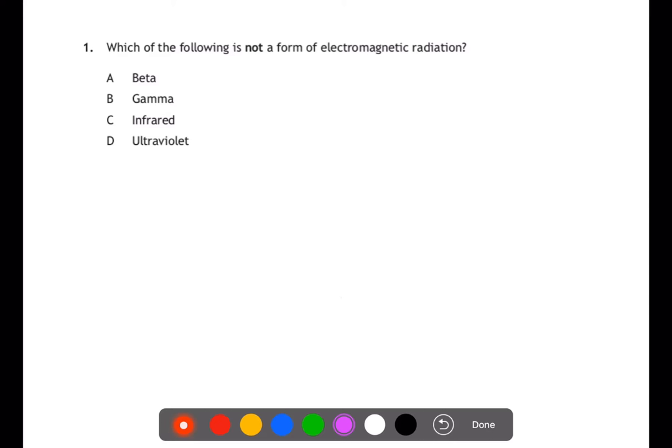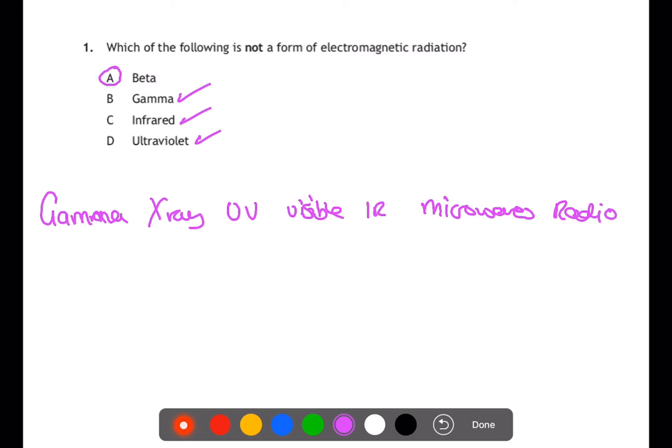So the order is gamma rays, x-ray, ultraviolet, visible light, infrared, microwaves and radio waves. Looking at the answers here we have gamma rays, infrared and ultraviolet. So the one which is not a form of electromagnetic radiation is A, beta. This is a particle which is released during radioactive decay.